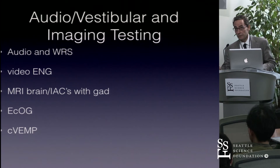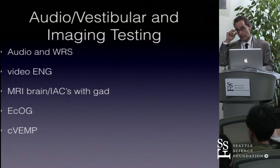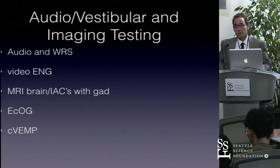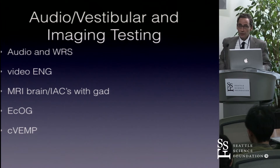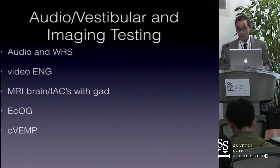For testing, we perform audiometric testing and word recognition scores. We use videonystagmography looking at caloric testing and horizontal nystagmus. We use imaging — MRI brain IACs with gadolinium. We look at ECOG, where a ratio greater than 0.4 with summation over action potential is suggestive of Meniere's disease, or an action potential greater than 3 milliseconds. ECOG is more sensitive as Meniere's becomes more severe. Cervical VEMP is suggestive of saccular function, with amplitudes decreased and thresholds elevated or absent in the involved ear.